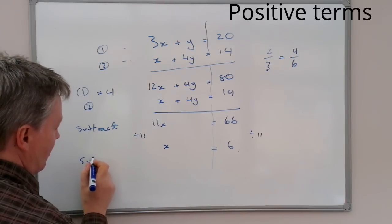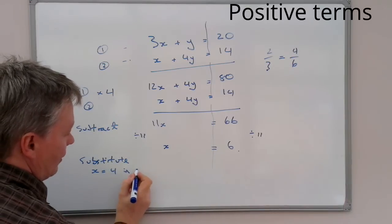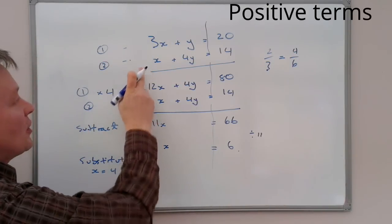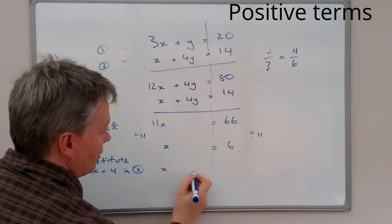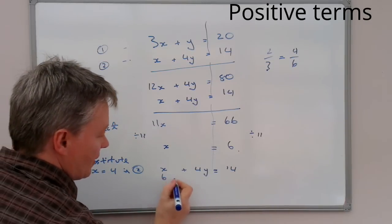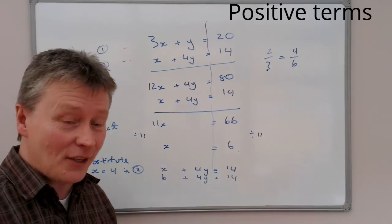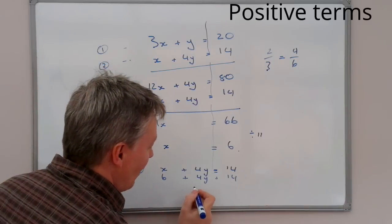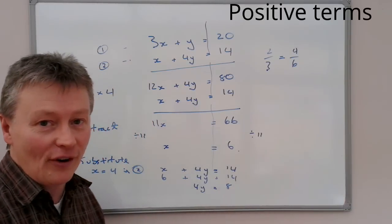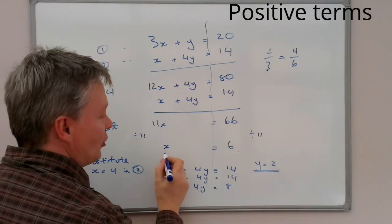So, again, I'm going to write this on the side. So, substitute x equals 6 in equation 2. Now, if I do that, equation 2, I've got x plus 4y equals 14. So, if x is 6 plus 4y equals 14, I'm going to subtract 6 from both sides. Unfortunately, I've run out a bit of board space, but I'm going to end up with 4y equals 8. And therefore, I'm going to be able to calculate that y equals 2.